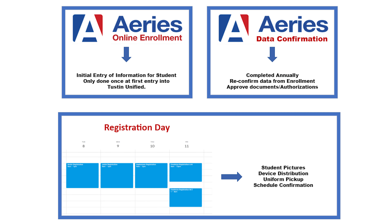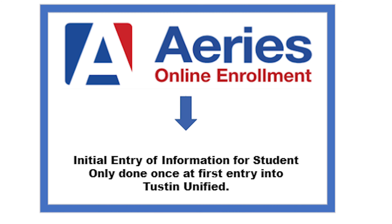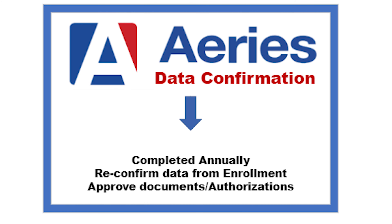The term enrollment has been used for several different processes, but these are three different processes. To help understand this, here is a visual of the three processes. First, we have online enrollment. This is the first collection of information we receive through our online enrollment site. You are taken through several screens to give us information about you and your student. This is only collected once for the student's entire enrollment history at Tustin. Data confirmation is done annually on your ARIES parent portal.